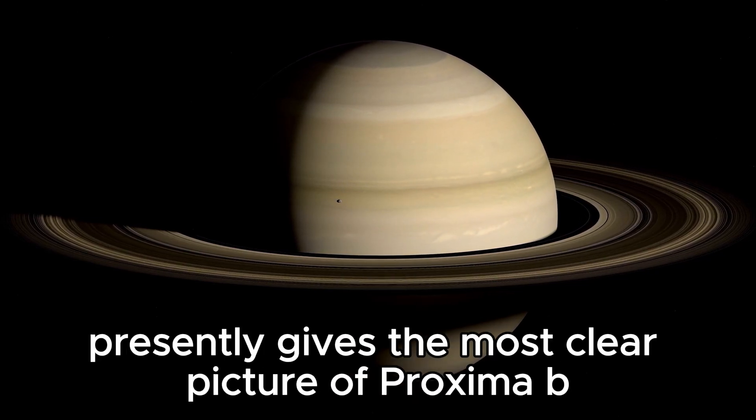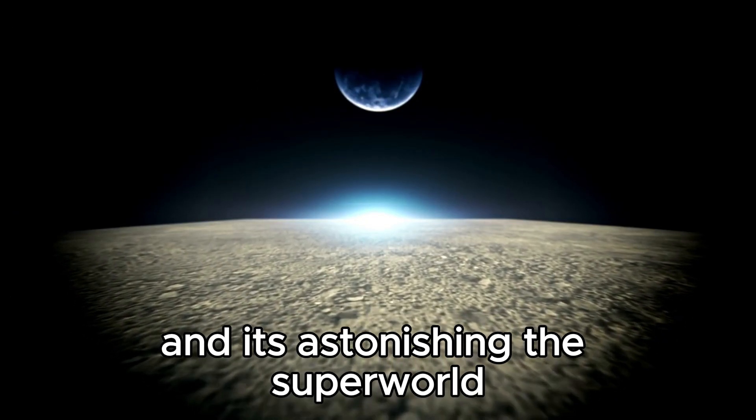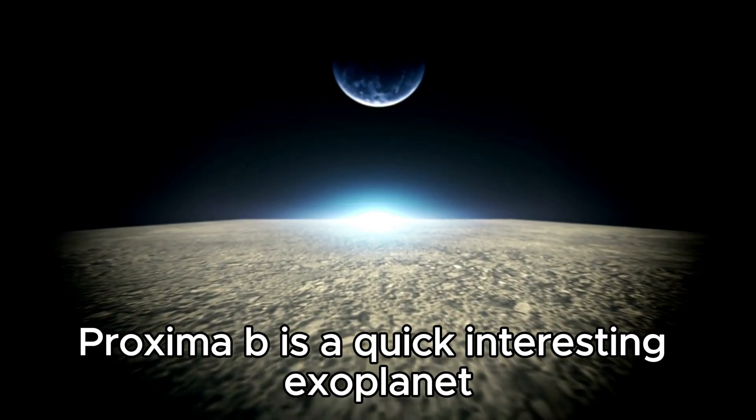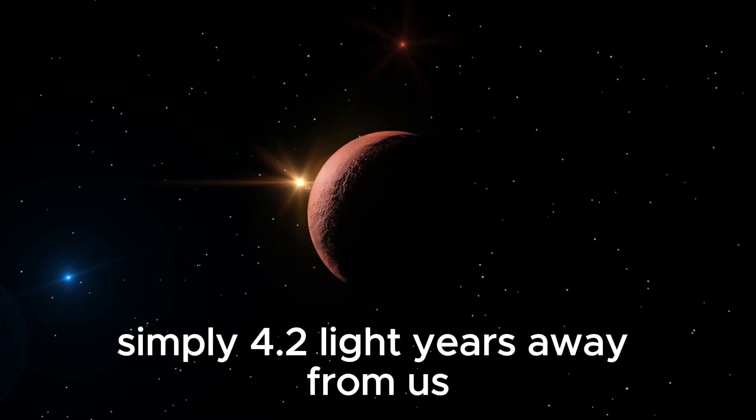The James Webb Telescope presently gives the most clear picture of Proxima b, and it's astonishing. The superworld Proxima b is a fast, interesting exoplanet circling the star Proxima Centauri, simply 4.2 light-years away from us.